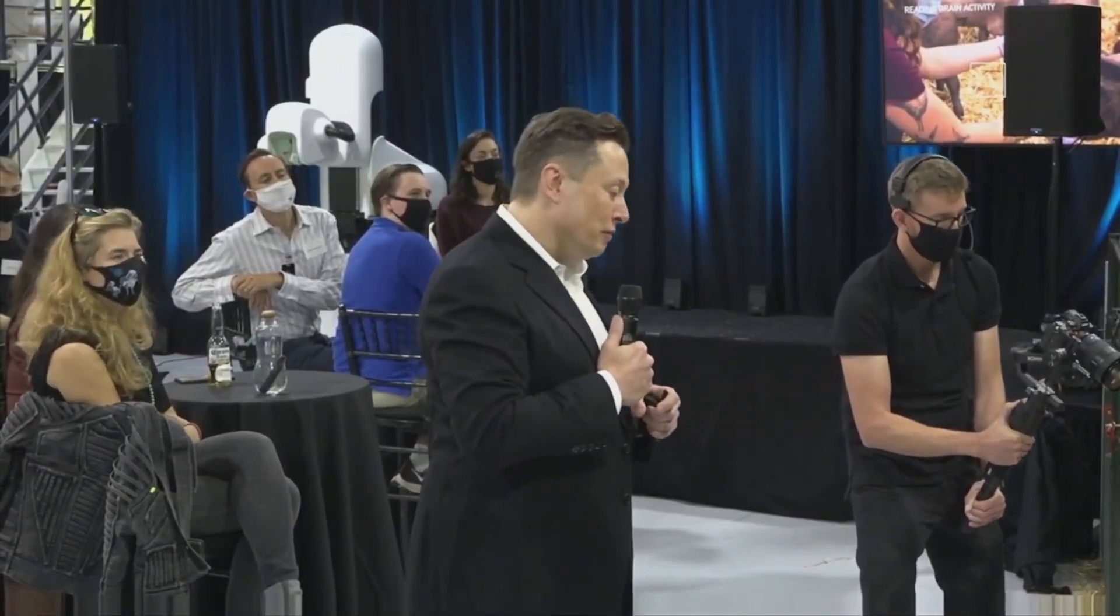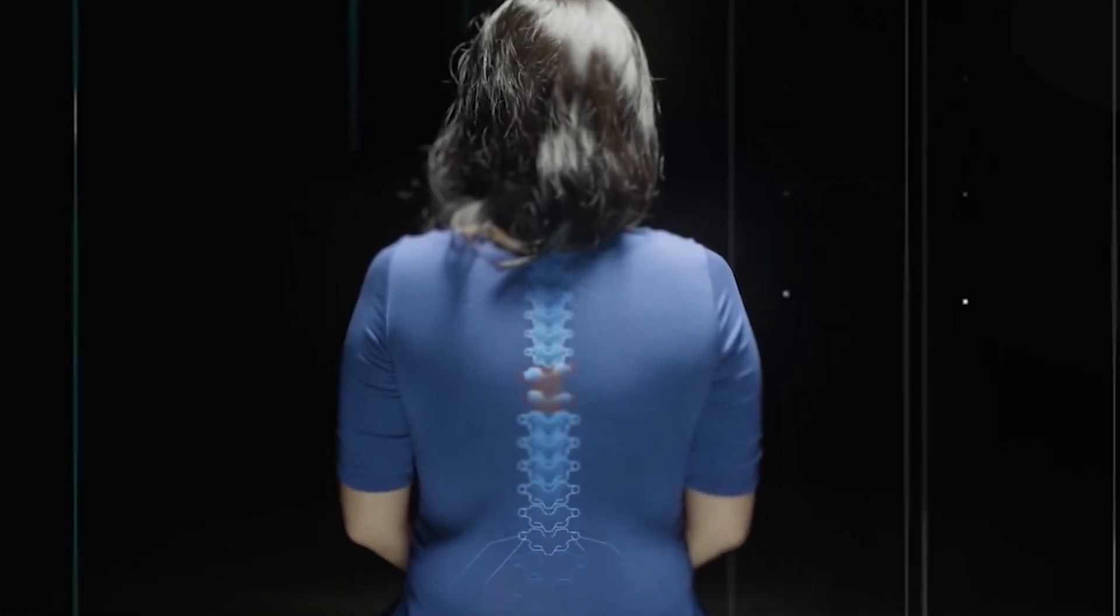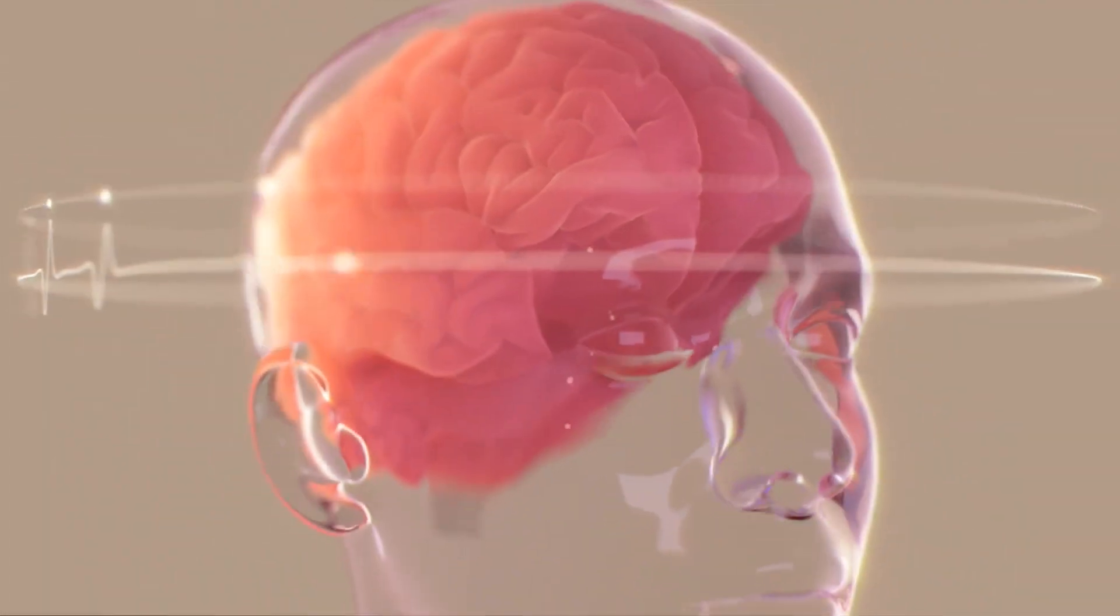The company is planning to start with patients suffering from quadriplegia due to spinal cord injuries. These patients will get four chips implanted in their brain which will be able to connect to 4,000 different neurons. But in Elon Musk's brain, the benefits go beyond the disabled.